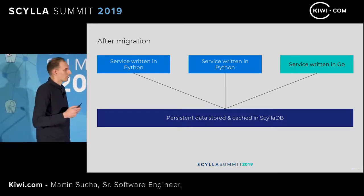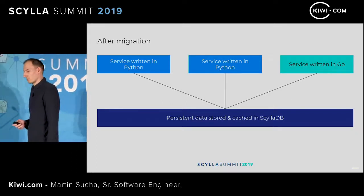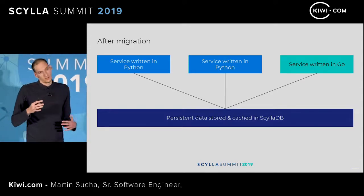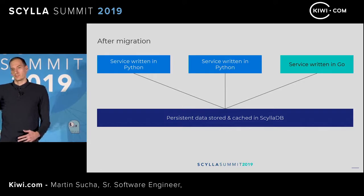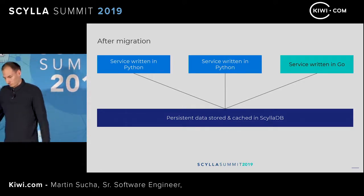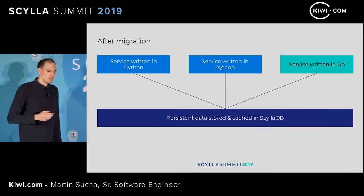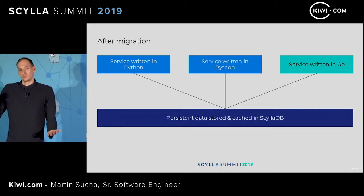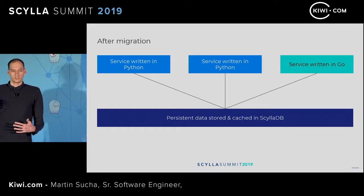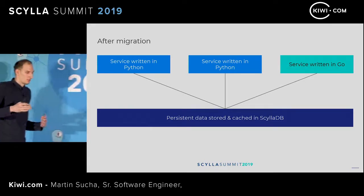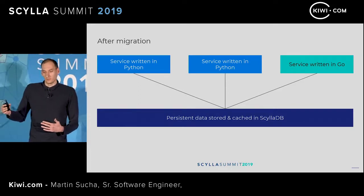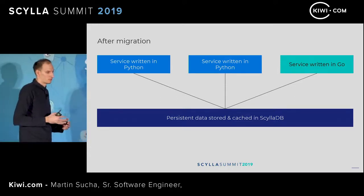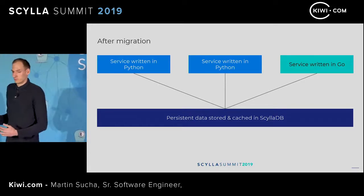We also rewrote one of our services from Python to Go. We chose a service on the user-facing side — it's called when you search, when you book, so it's called a lot of times, and we wanted to optimize that. Go allows us to take advantage of compiled code for performance improvements, and we also get static type checking, which is not in Python, though you can use a static analyzer.